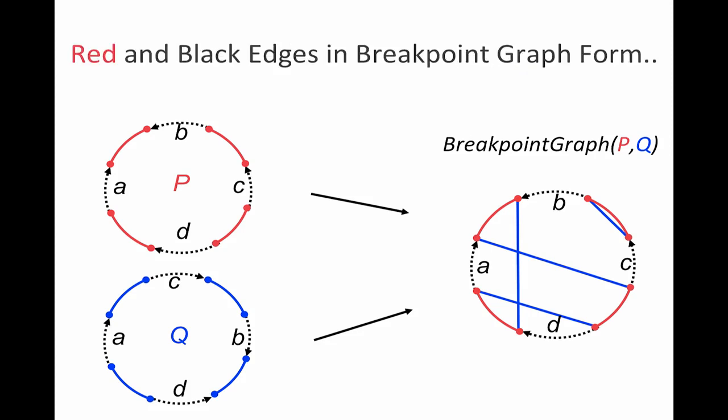So the first question: red and black edges in the breakpoint graph, what do they correspond to? Of course, they correspond to genome P because the breakpoint graph is simply obtained by superimposing P and Q. What about blue and black edges? Of course, they correspond to genome Q.